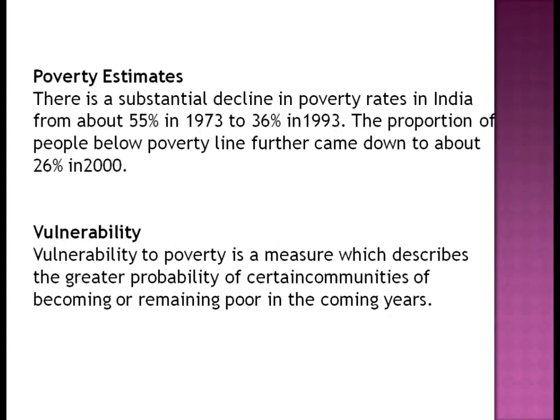There has been a substantial decline in the poverty rate in India — from about 55% in 1973 to 36% in 1993. The proportion of people below the poverty line further came down to about 26% in 2000, showing how the poverty rate has decreased over time.